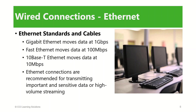Except for the older 10 Mbps Ethernet standard, Ethernet networks are faster than most wireless networks. They are more stable because you do not have to worry about signal interference, and more secure because the signals are not sent through the air where they can be intercepted.